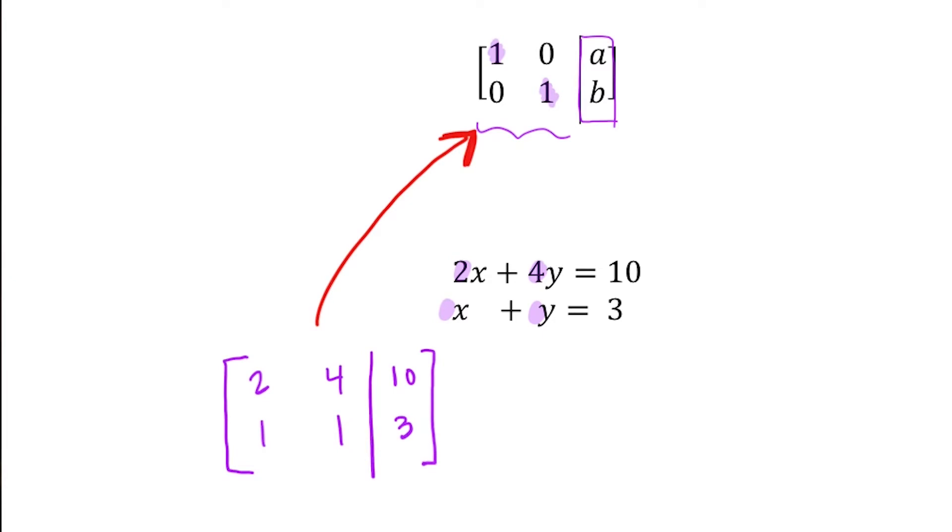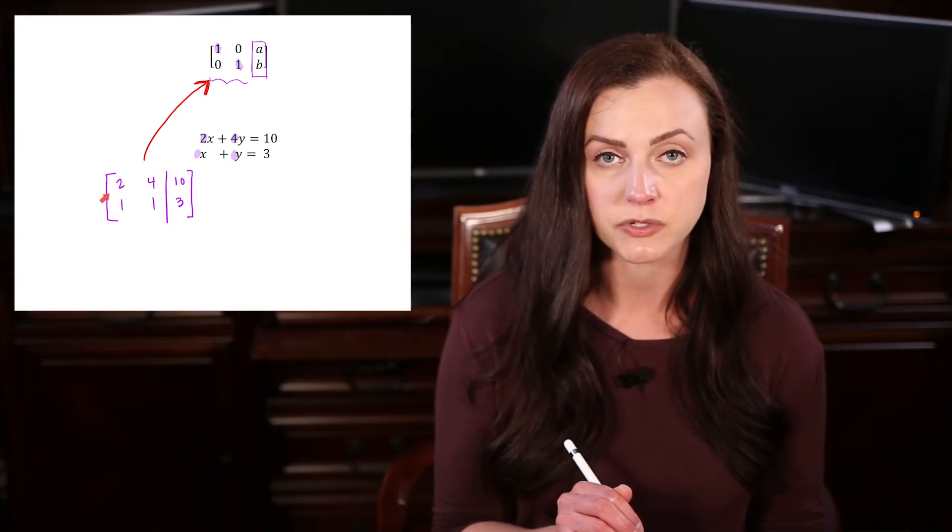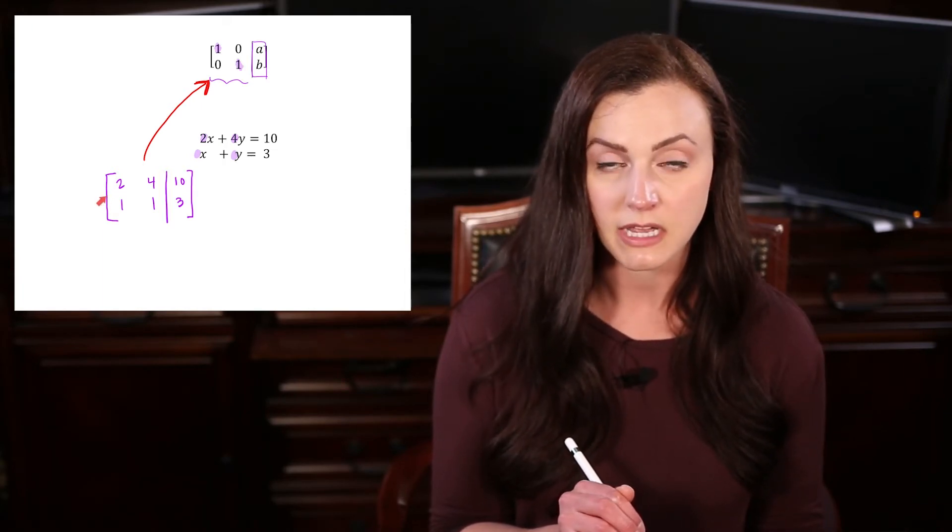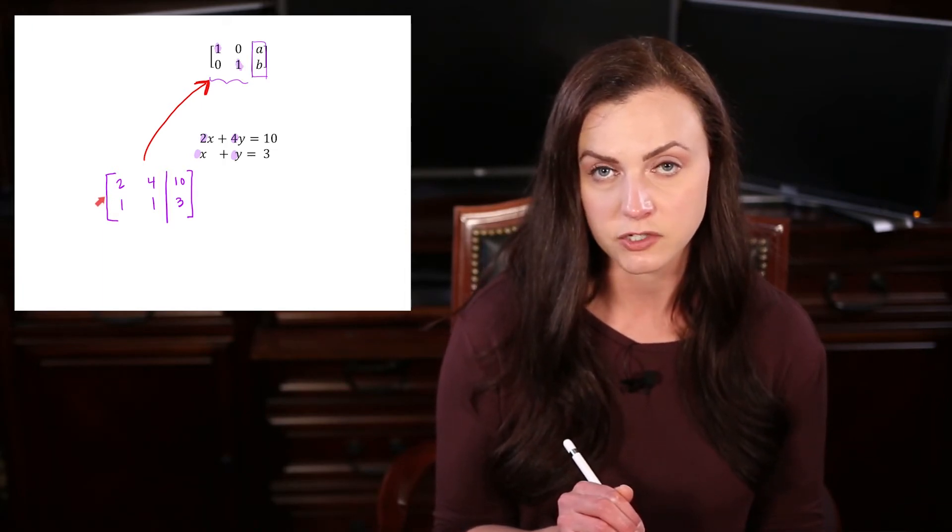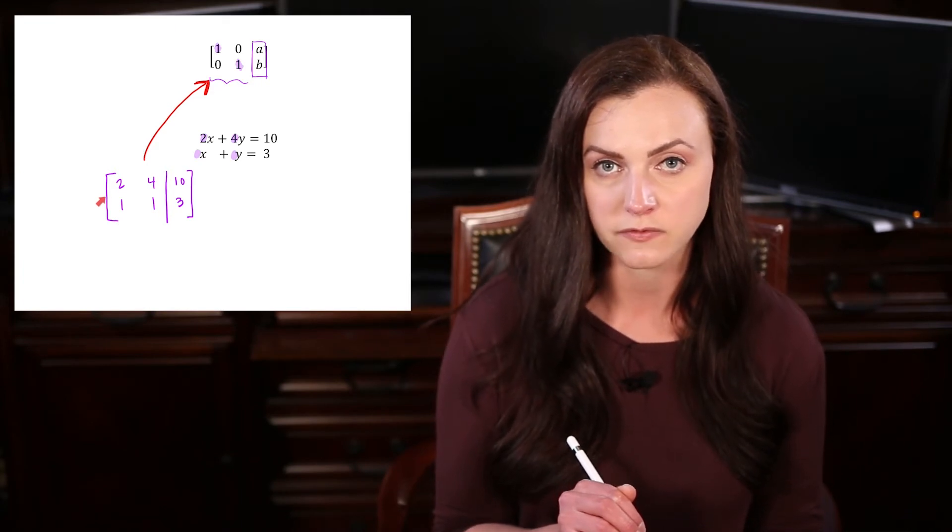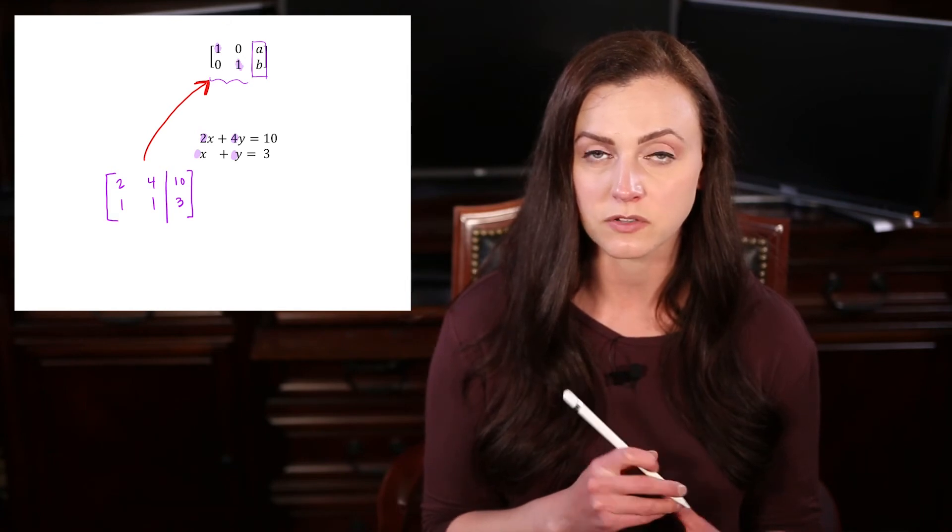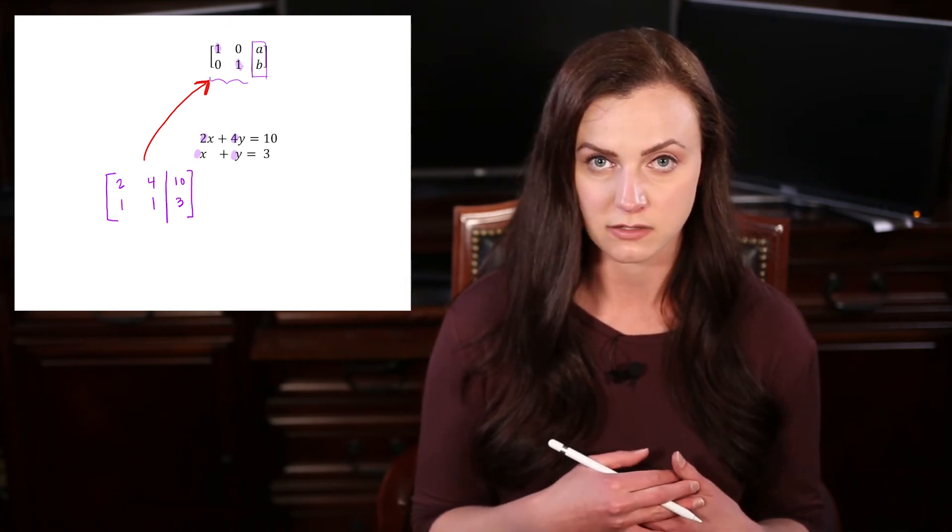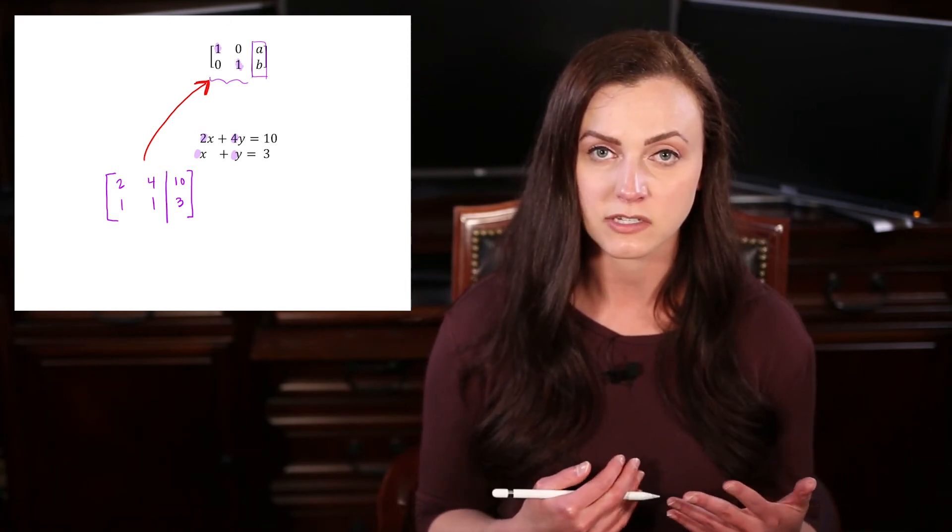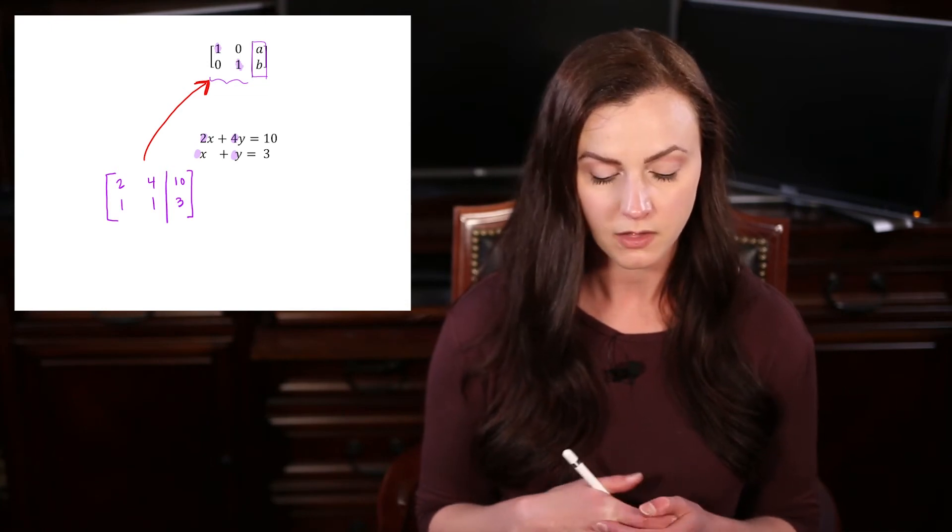The first thing I want to do is get that 1 in the top left-hand corner. Right now it's a 2. There are a few different ways to do this. Sometimes it works to divide by a constant. In this case, it does because we have 2, 4, and 10, which are all divisible by 2. But that doesn't always work because sometimes when you divide by a constant, you'll create fractions, and you don't want to be dealing with fractions in a matrix if you don't have to. So if you'll look here, we can divide by that 2.